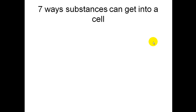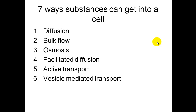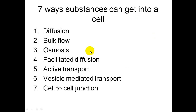There are seven ways that substances can get into a cell. Number one, diffusion. Two, bulk flow. Three, osmosis. Four, facilitated diffusion. Five, active transport. Six, vesicle-mediated transport. Seven, cell-to-cell junction. We're going to go through these, but not all today — we're going to stop at passive transport, which is numbers one through four.